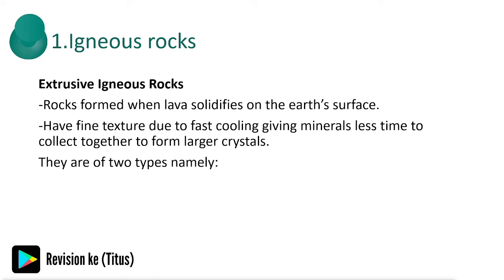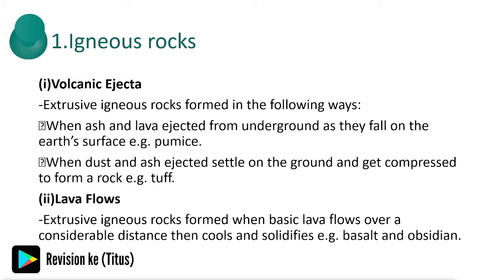Extrusive igneous rocks are formed when lava solidifies on the earth's surface. Extrusive is on the earth's surface while intrusive is below it. They have a fine texture due to fast cooling, giving minerals less time to gather and form large crystals. There are two types: volcanic ejecta, formed when ash and lava ejected from the ground fall on the surface, or when dust and ash settle and get compressed — for example, tuff. And lava flows, formed when basic lava flows over a considerable distance then cools and solidifies — examples include basalt and obsidian.